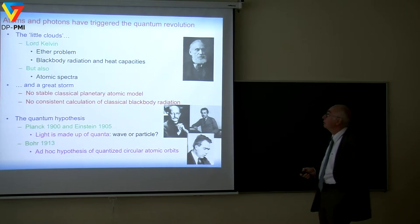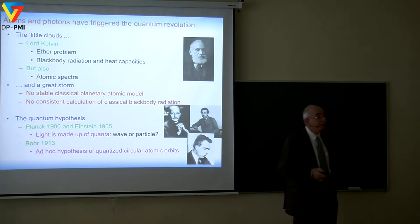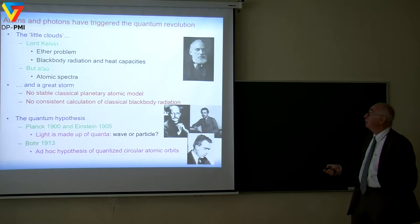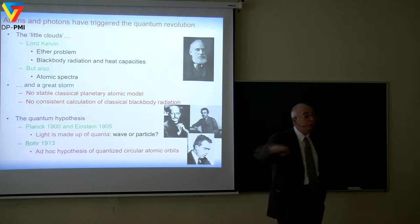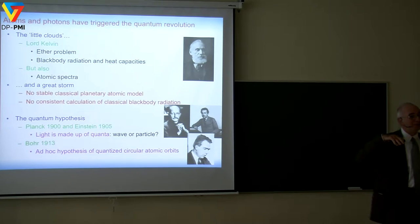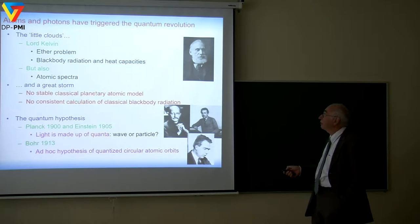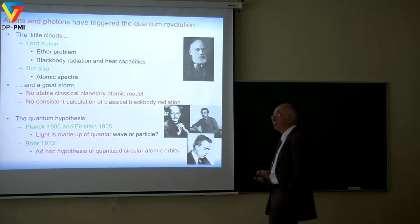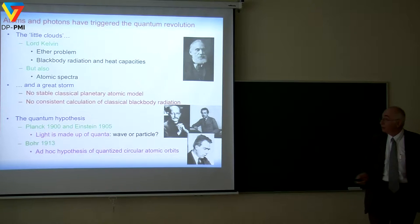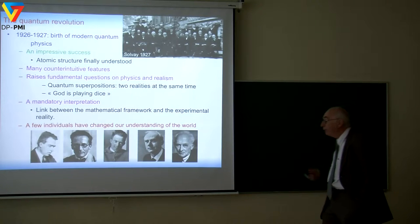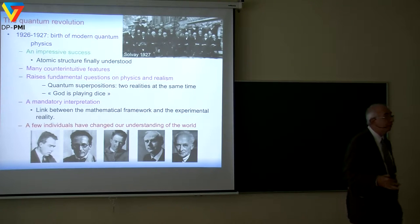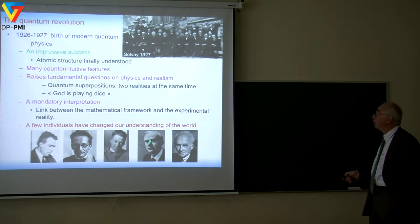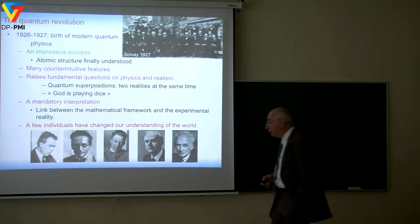The ether problem led to relativity, but that's a completely different topic. The blackbody radiation and heat capacities, and the problem of the atomic spectrum — these two little clouds turned into a great storm that washed out classical physics, because there is no stable planetary atomic model and no consistent classical calculation of blackbody radiation. That led to the early attempts of quantum physics: Planck, Einstein, Bohr in 1913, and finally, about a quarter of a century later, to the real appearance of quantum physics as it is now.